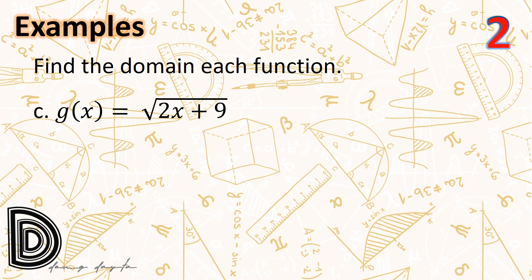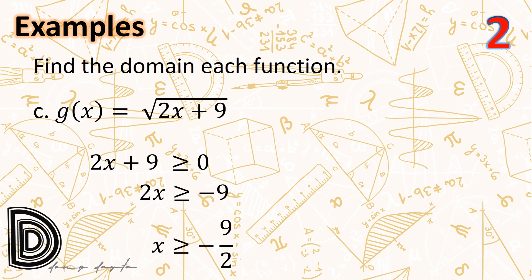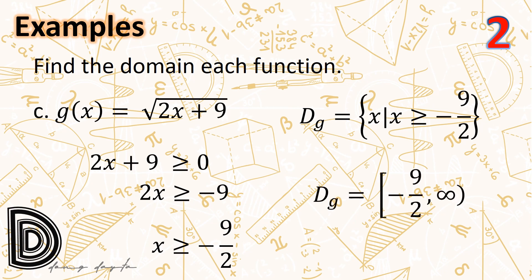Next, g(x) = √(2x + 9). Since g involves a square root, the radicand must be non-negative. We need 2x + 9 ≥ 0, so 2x ≥ -9, giving x ≥ -9/2. In interval notation, the domain is [-9/2, +∞).